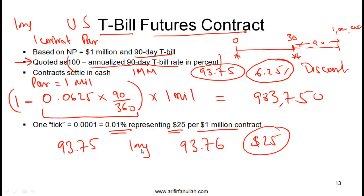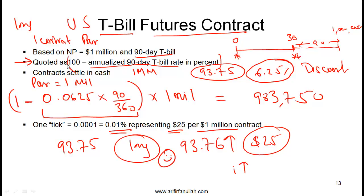For a long position you benefit when the price of the underlying goes up. As quoted in the IMM convention, when this price goes up the long is happy; if this price goes down the long is unhappy. Had we simply quoted on an interest rate basis, it would be confusing — an interest rate going up is bad for a bond holder. Hence the convention of using 100 minus the annualized rate: if the rate goes down, the IMM metric goes up, and the holder of the long position is happy.